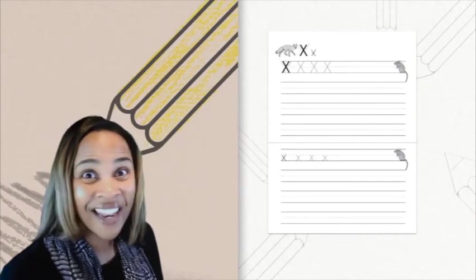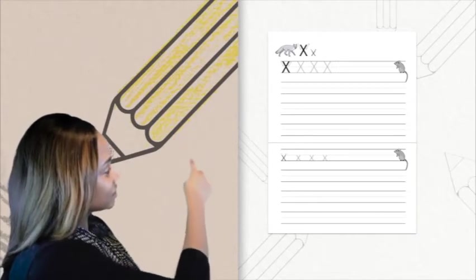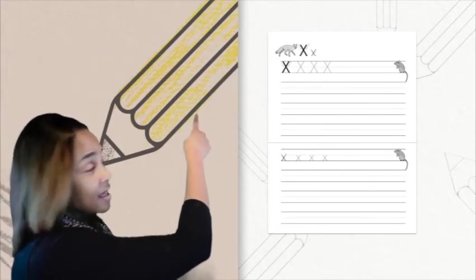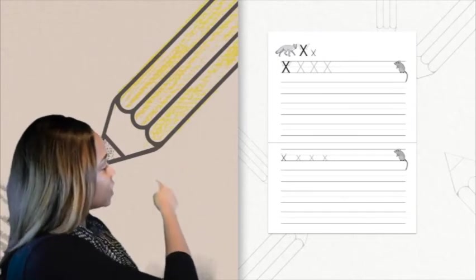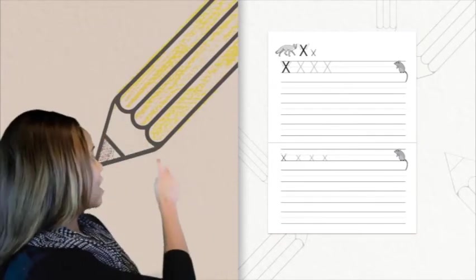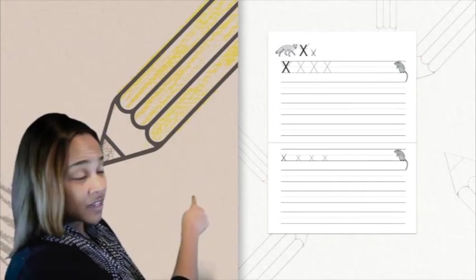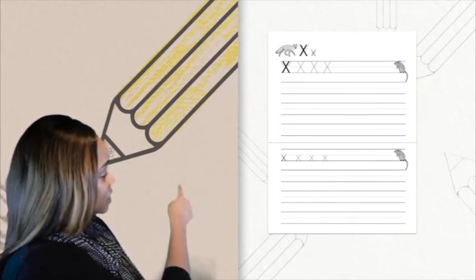Now let's make our last letter — let's make our uppercase X. Starting at the headline and slanting down to the right all the way to the foot line and stop, going back up to the headline and then coming down at a slant to the left, crossing in the middle and going to the foot line. Now let's do our lowercase X. Starting at the belly line and slanting down to the right, stopping at the foot line, coming back up, going to the belly line again and this time slanting to the left, crossing in the middle and stopping at our foot line.